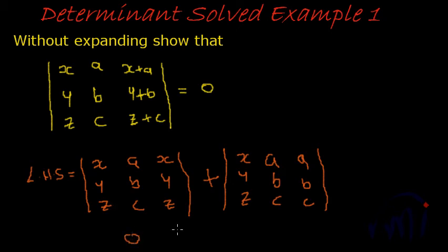So this becomes 0 plus 0. Again, here a, b, c, a, b, c, both the columns are 0. So this becomes 0.